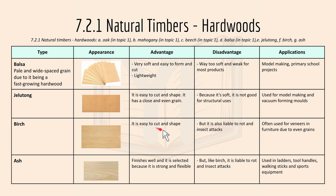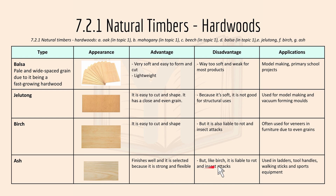Birch wood is easy to cut and shape, but it's also liable to rot and insect attacks. It's often used in veneers and furniture due to its even grain. Ash wood finishes well and is selected because it is strong and flexible. But like birch wood, it is liable to rot and insect attacks. It's used in ladders, tool handles, walking sticks, and sports equipment.